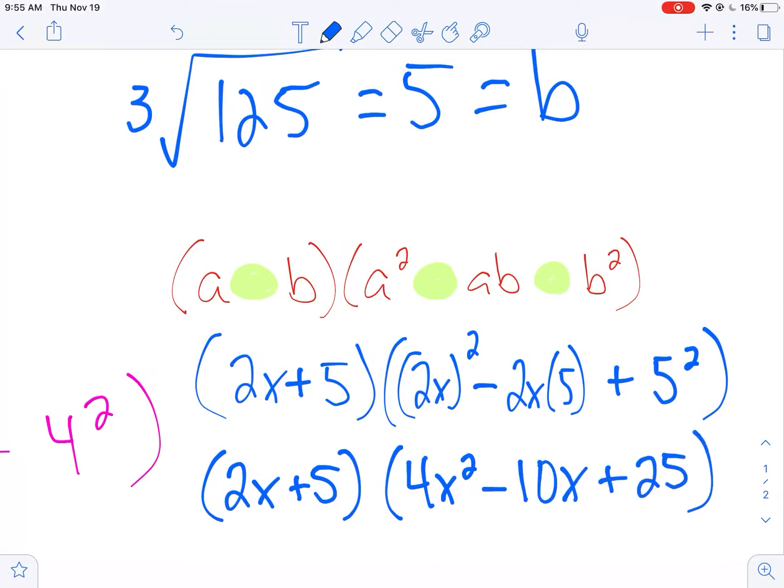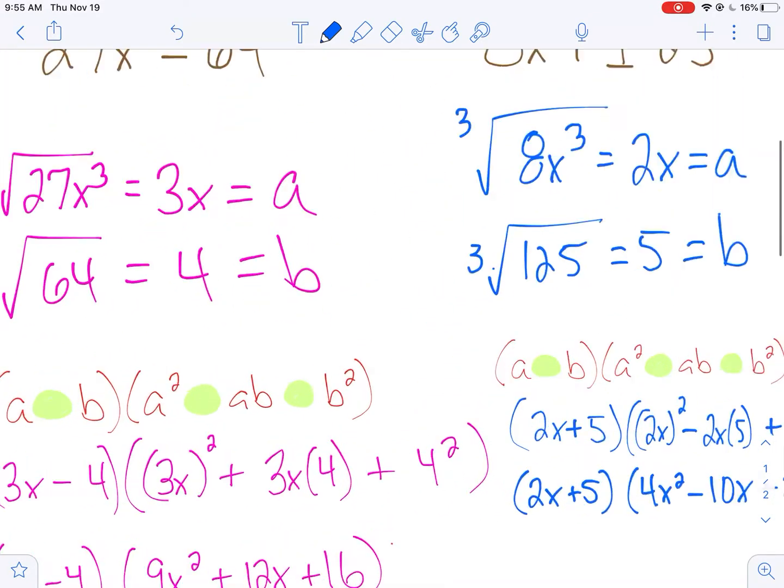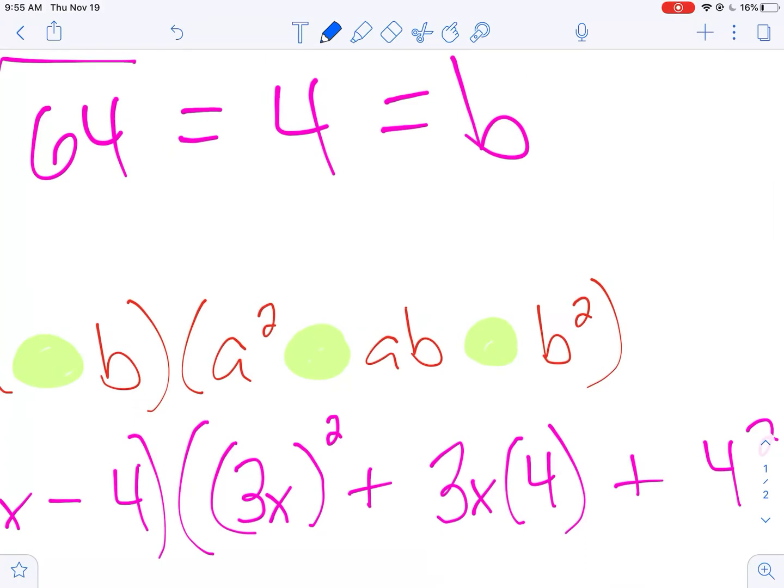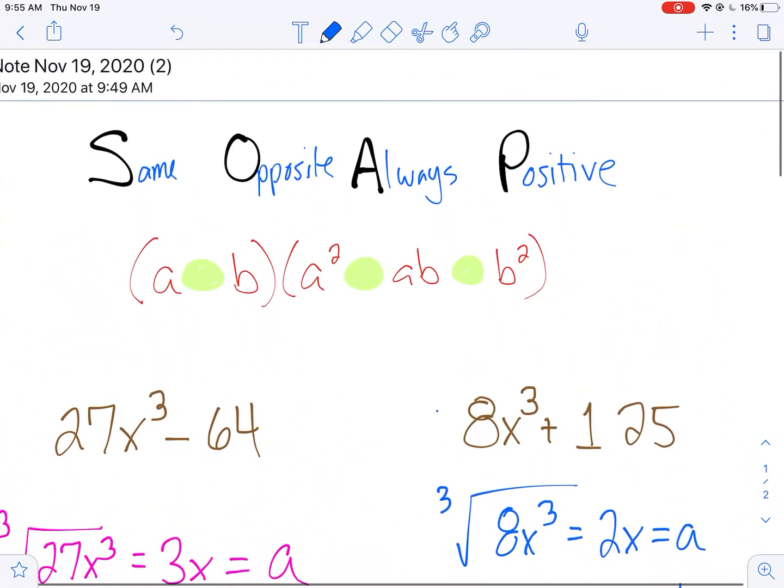So again, if you remember the same basic formula: (a±b)(a²±ab±b²). And then you just use the acronym - Same, Opposite, Always Positive. You can fairly easily always factor out a difference or a sum of cubes. Best of luck.